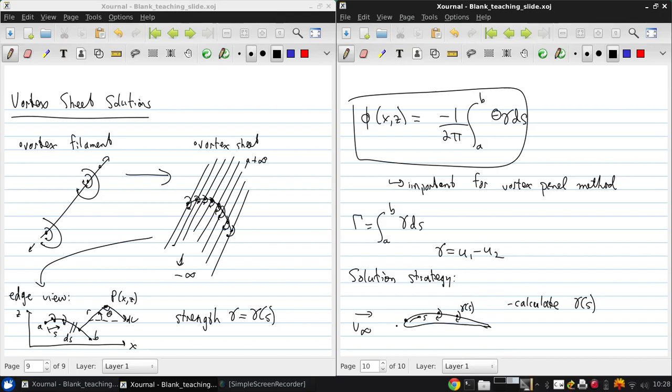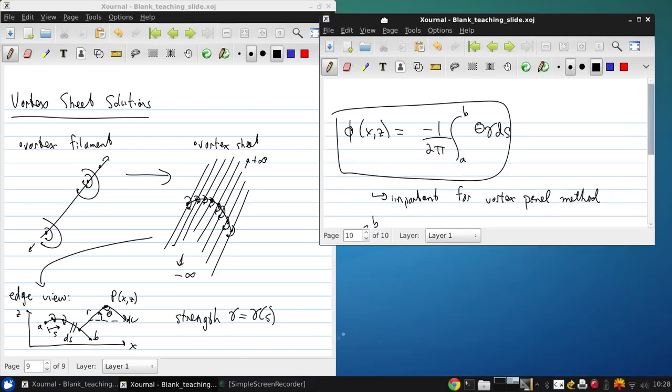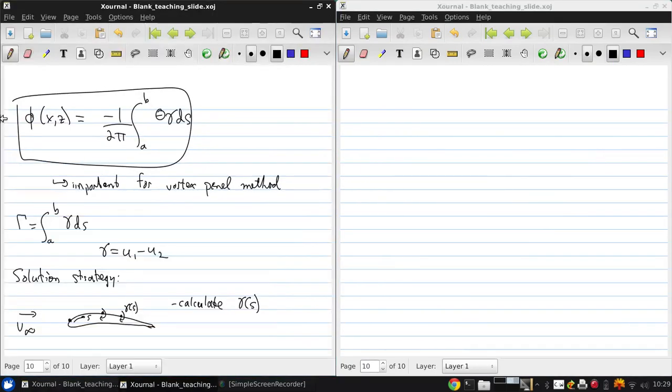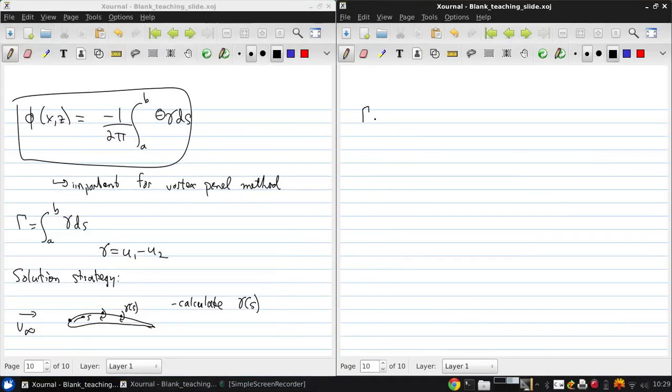Basically we don't want the flow magically entering or leaving the surface of the airfoil. So if we do that, what does that mean mathematically? Well, what it means is that since we know the circulation is the integral of gamma dS, and lift per unit span is given by the Kutta-Joukowski theorem, then essentially we're done. So if we calculated gamma of S, we can get the circulation by integrating and use the Kutta-Joukowski theorem to get the lift.